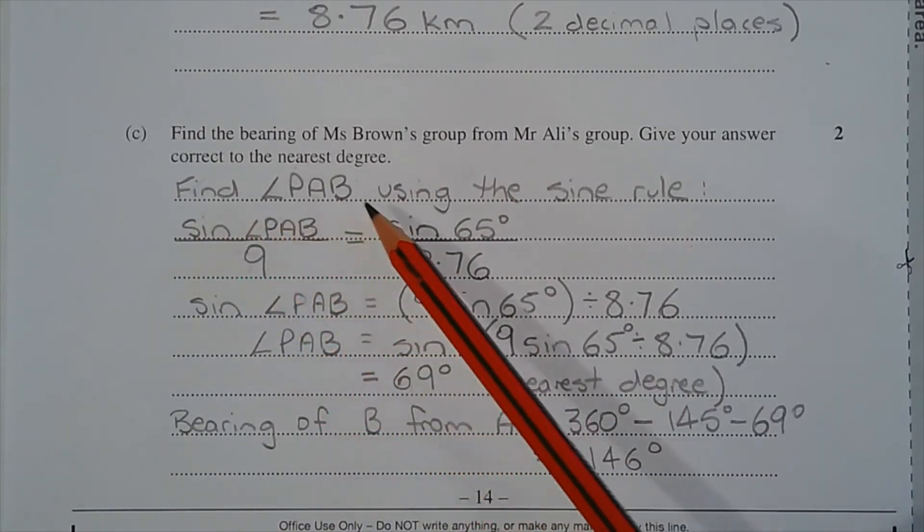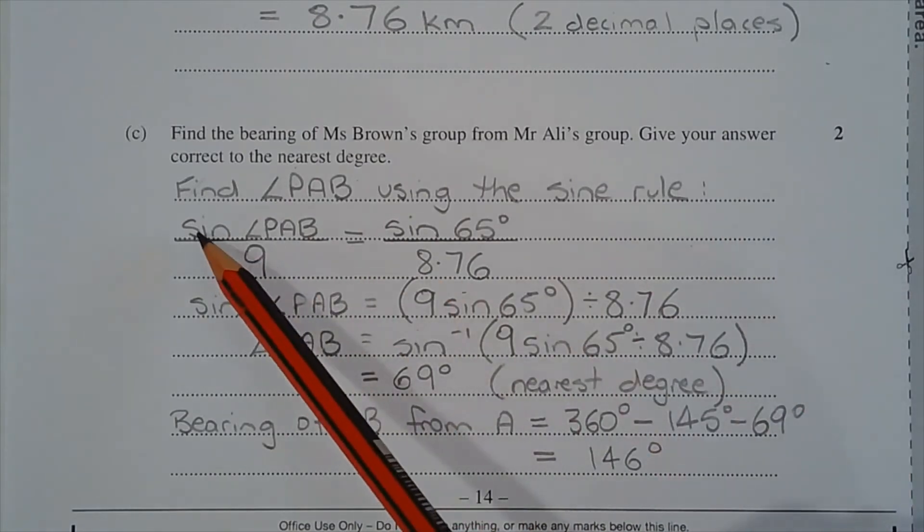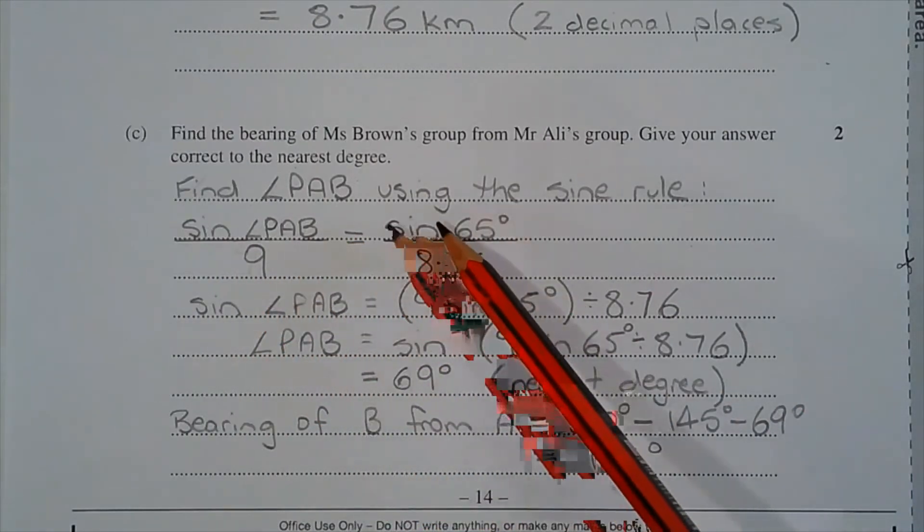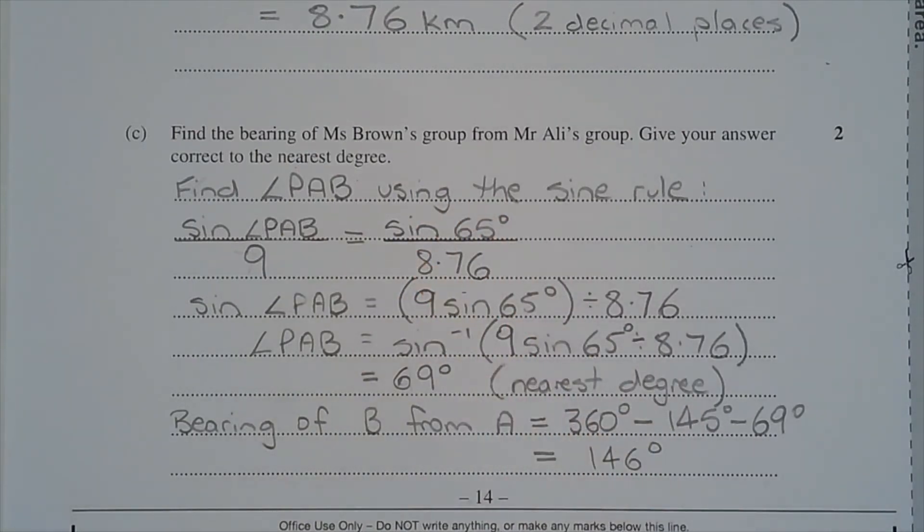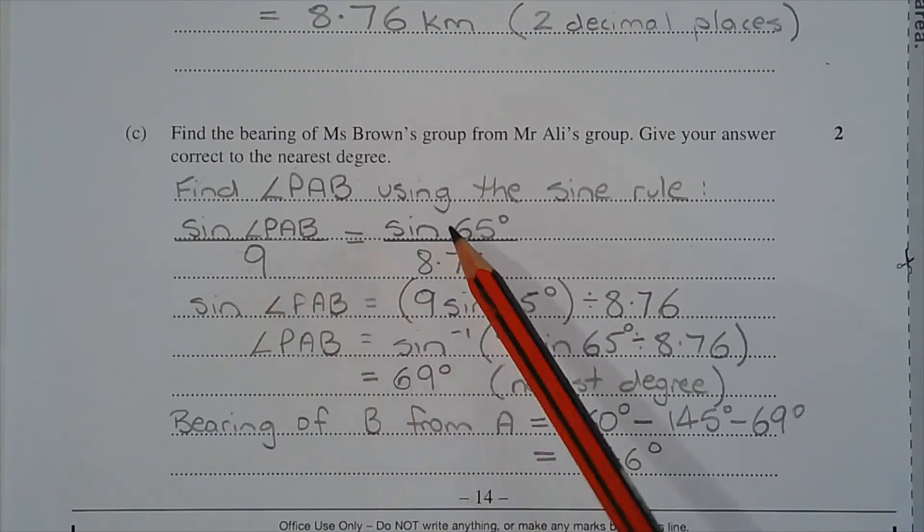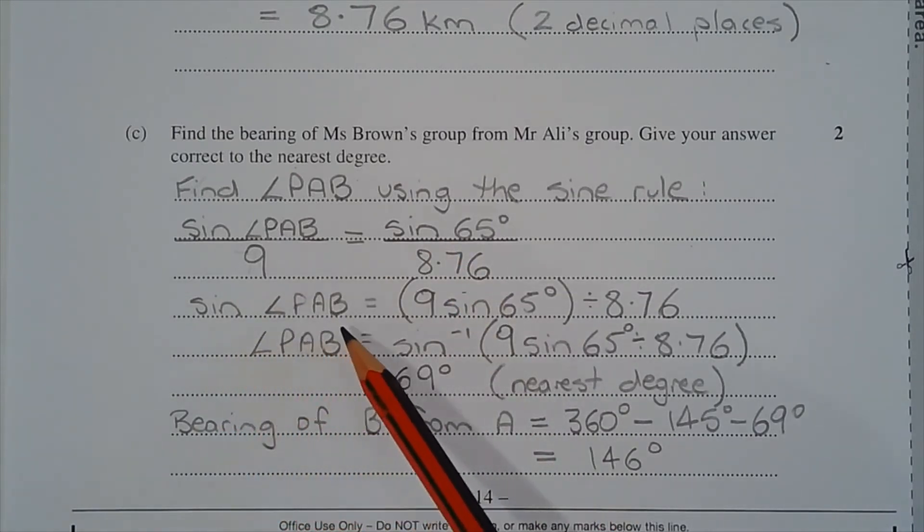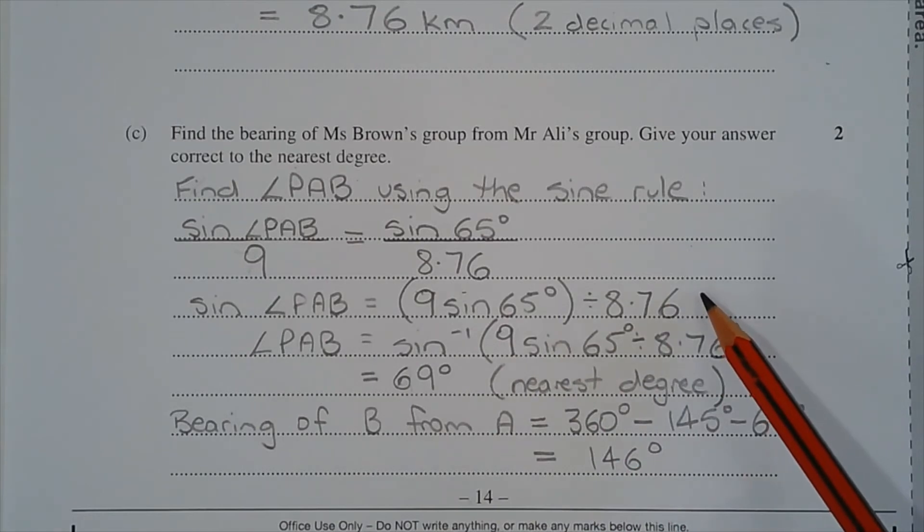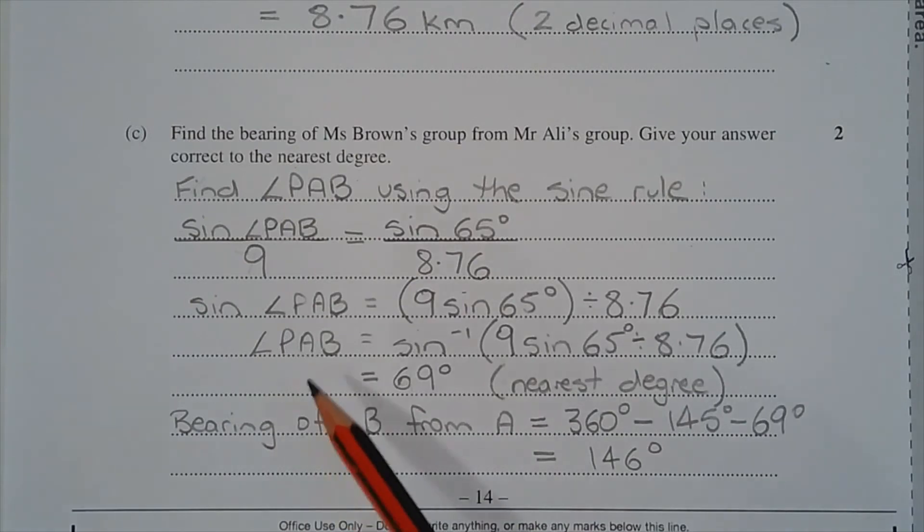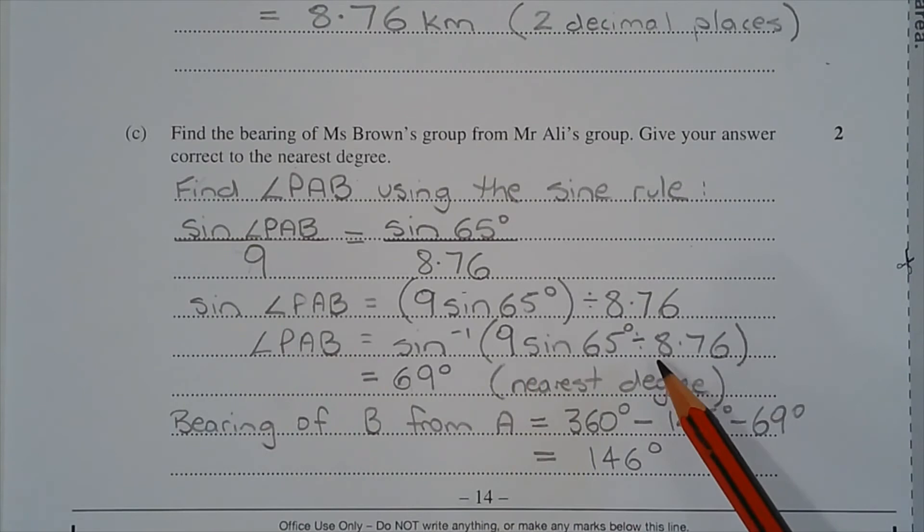I'm going to find angle PAB using the sine rule. So sine of angle PAB over 9 is equal to sine of 65 over 8.76. So that's the known side angle pair. So multiplying both sides by 9, we have sine of angle PAB is equal to 9 sine 65 degrees divided by 8.76. And taking the inverse sine of both sides, angle PAB is equal to the inverse sine of 9 sine 65 degrees divided by 8.76. And that equals 69 degrees to the nearest degree.